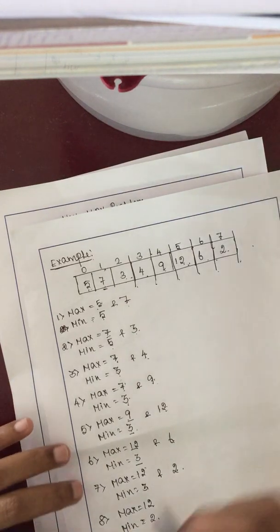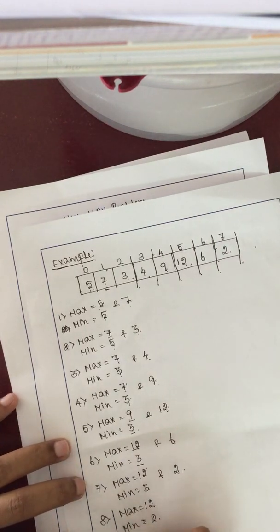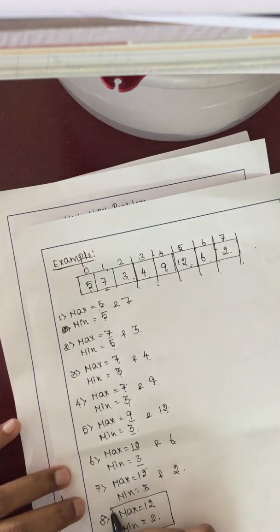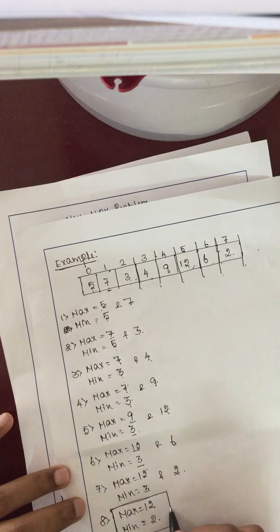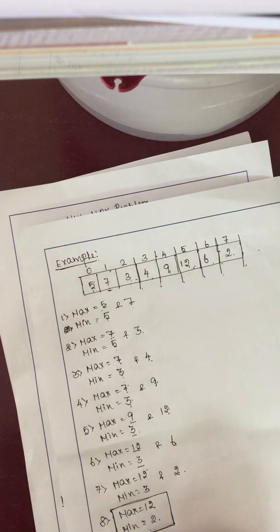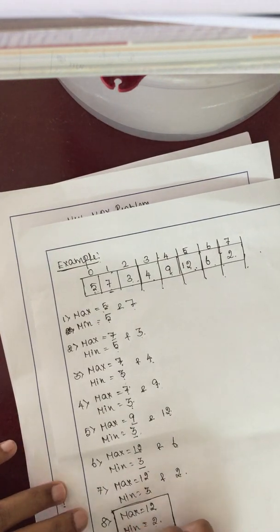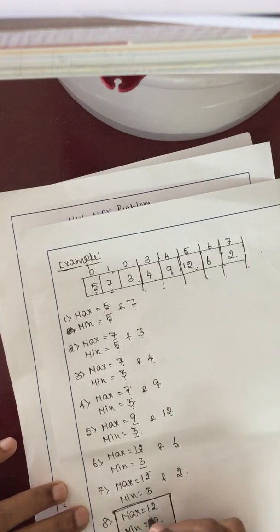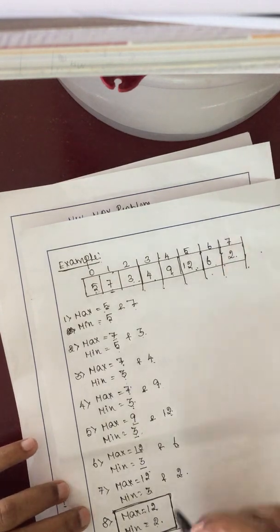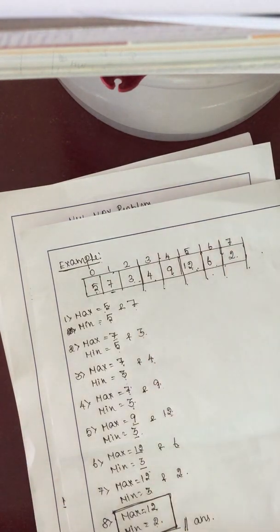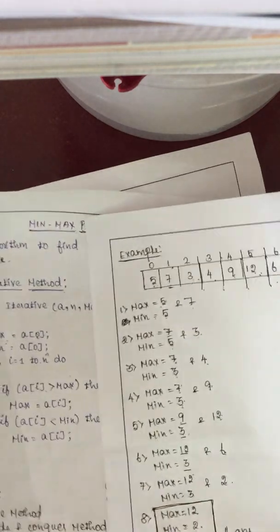There are no more elements to compare, so we stop here. In the final step, the max value retained is 12 and the min value is 2. So the maximum element is 12 and the minimum element is 2 — this is our final solution using the iterative method.